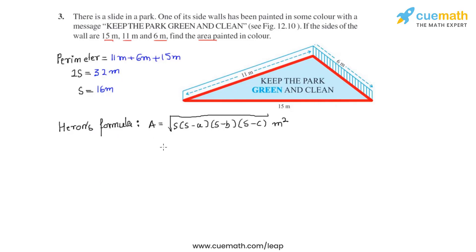As we know all these values let's plug them in and we write under root 16 times 16 minus 11 times 16 minus 6 times 16 minus 15.